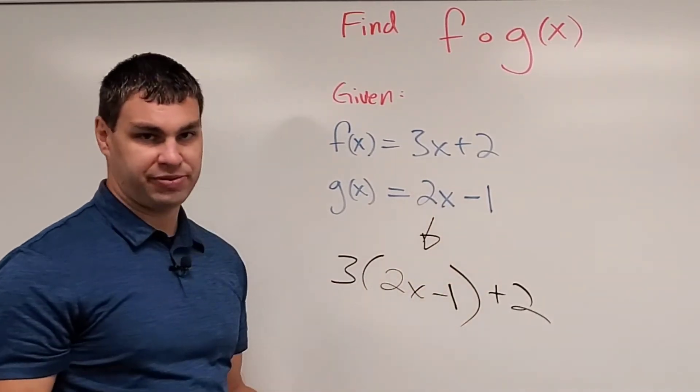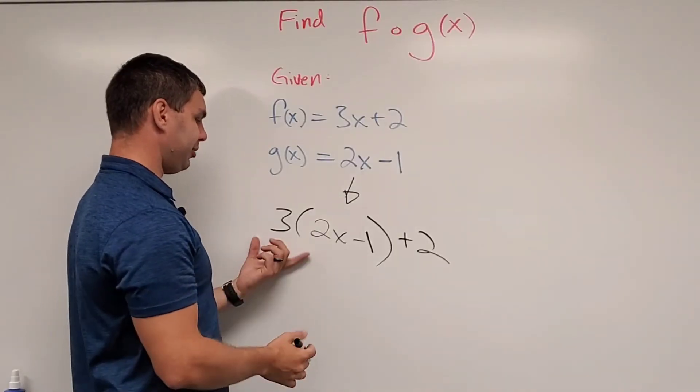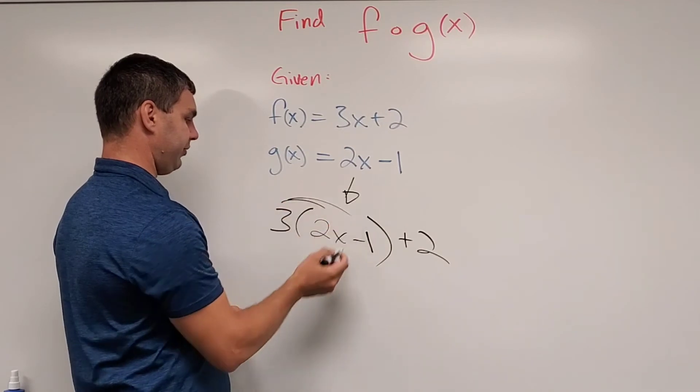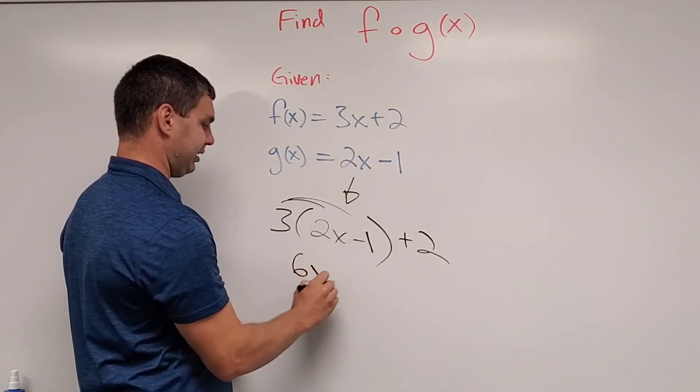If you can simplify, you simplify. In this problem, we can distribute and see if there's any like terms. If I distribute, this is going to give me 6x...